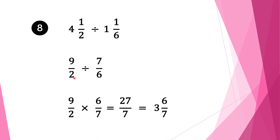Now we have a normal fraction division. We keep the first fraction 9 over 2 as it is, change the division sign into multiplication, and take the reciprocal of the second fraction. It is 7 over 6, so we write it down as 6 over 7. We check whether we can cancel anything — we can cancel 2 and 6. So 2 goes into 2 once, and 6 goes into 2 three times. We multiply our numerators: 3 times 9 is 27, and 7 times 1 is 7. Our solution is 27 over 7, but this is an improper fraction, so our final solution is 3 and 6 over 7.